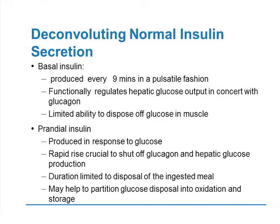If you take that physiology and say you're going to treat someone, then those nine-minute pulses would be your basal insulin. You want it to be basically flat — that's what the body does. It produces a nine-minute flat pulse. It basically regulates how much glucose comes out of the liver. When insulin is there, it is able to suppress glucagon, and that combination allows you to regulate hepatic glucose output. It has very limited ability to actually take glucose from the blood and put it into the muscle. If it had a tremendous ability to do so, all of us would be hypoglycemic at night. That insulin is only geared to regulate hepatic glucose output.